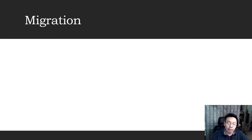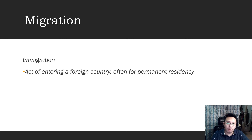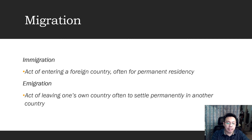Another factor that can affect the population is migration. Migration, simply defined, is the process of movement of people from one place to another. Immigration is the act of entering a foreign country, often for permanent residency, while emigration is the act of leaving one's own country, often to settle permanently in another country.